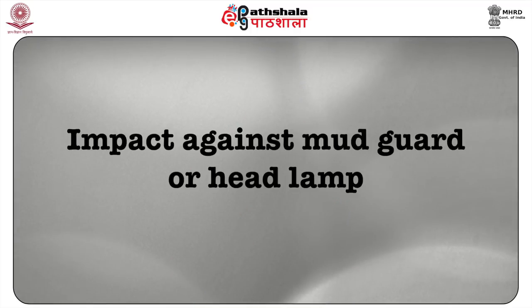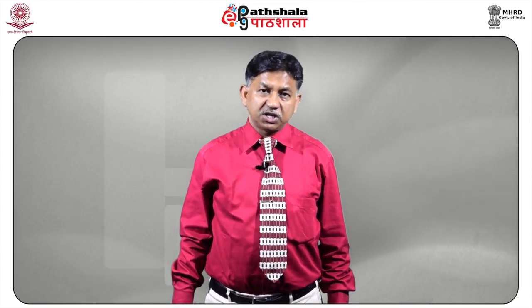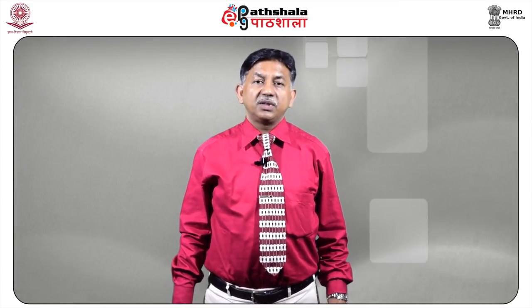Impact against the mudguard or headlamp will cause fracture of the pelvis, pubic rami fracture, fracture-dislocation of the sacroiliac joints, and imprint abrasions due to headlamps and radiators. Injuries depend on how the victim was positioned. Frontal impacts may cause head injury, chest injury, and fracture of the ribs. Side impact causes injuries of the arms. Rear impact causes injury to the buttocks and sacroiliac joints. The fractured portion of the vertebral column may move forward and cause transaction of the spinal cord and thoracic aorta.